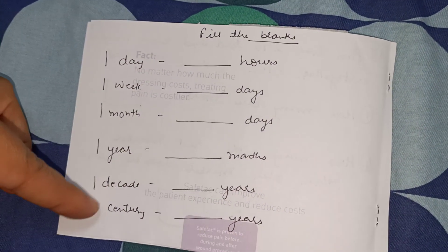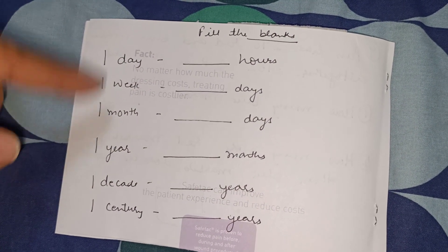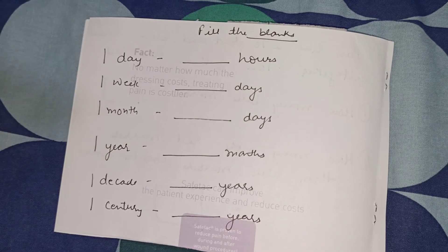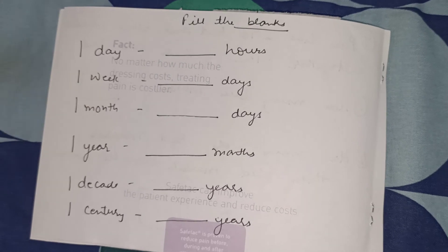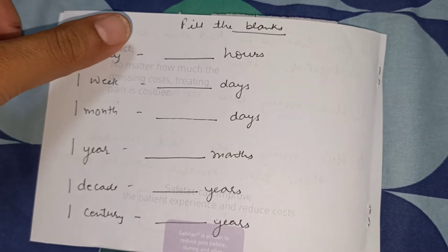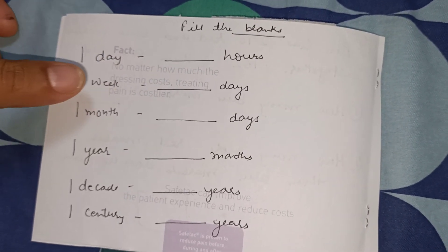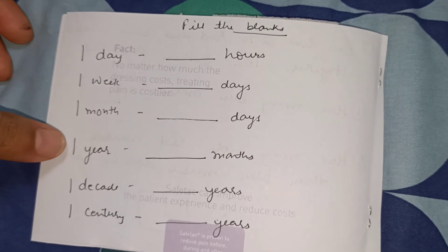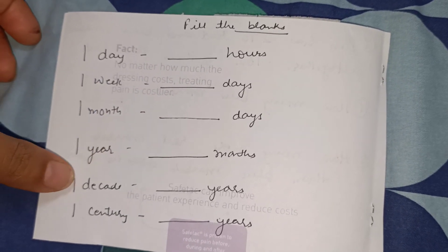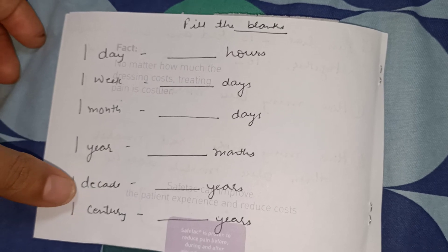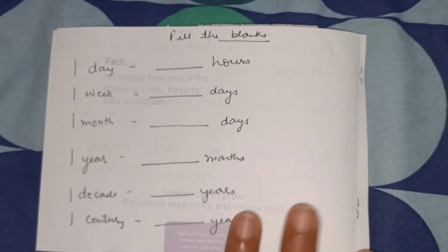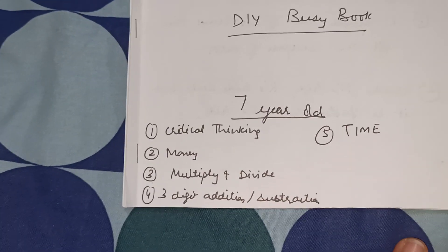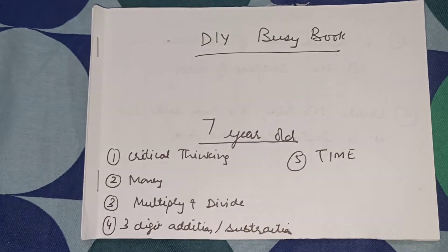This concept comes from our discussions — she read in a history book about decades and centuries and was asking how many years. So here we're practicing what I've already told her verbally: one day has 24 hours, one week has 7 days, one month has 30 or 28 days, one year has 12 months, one decade has 10 years, and one century has 100 years. We've talked about this already because of the books, so just practicing those concepts in these busy book activities. Hope you enjoyed it — bye-bye!